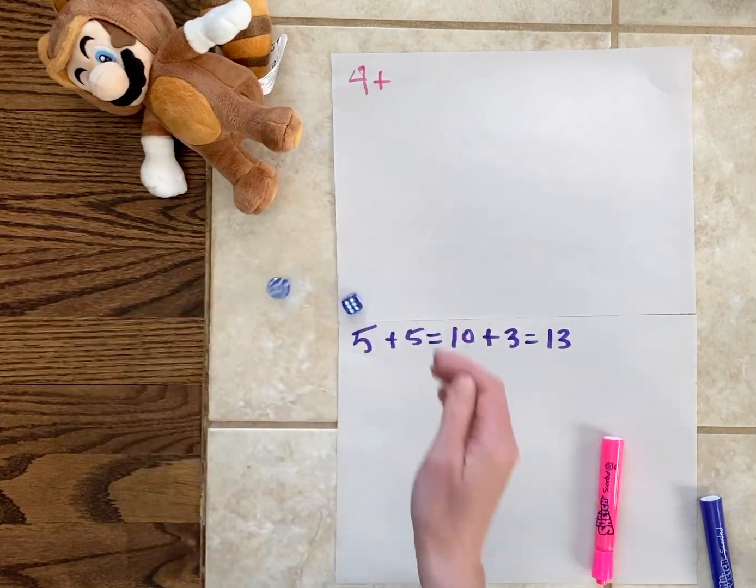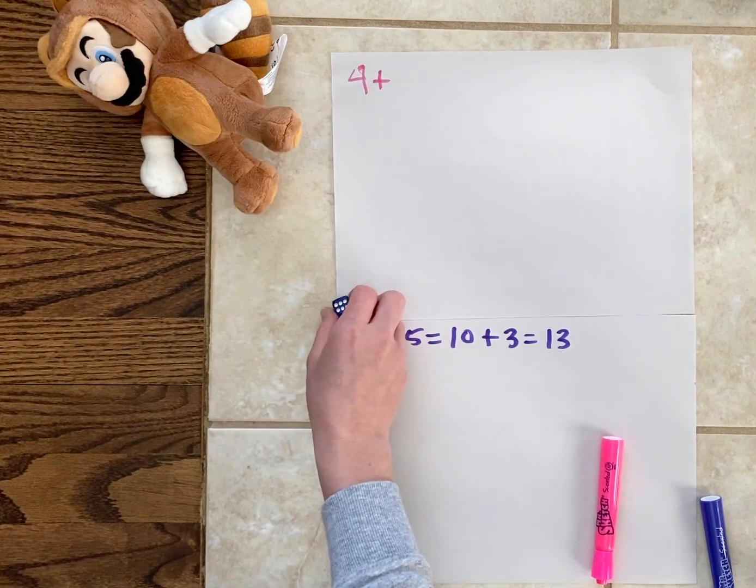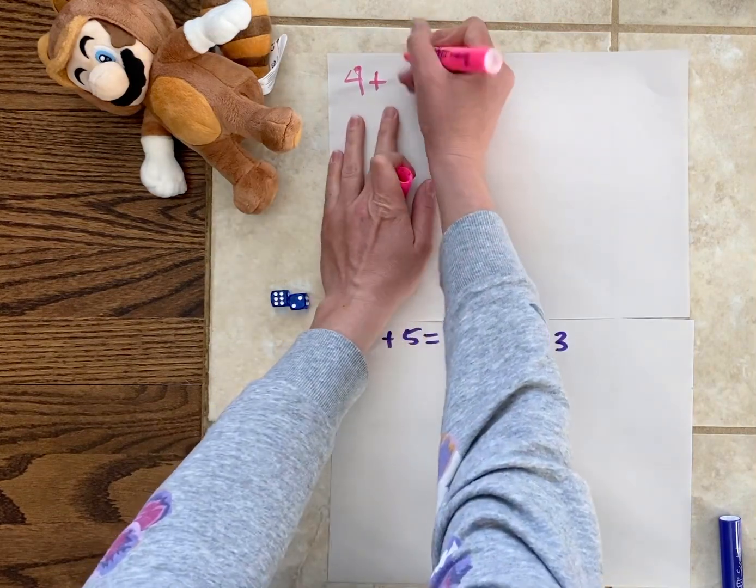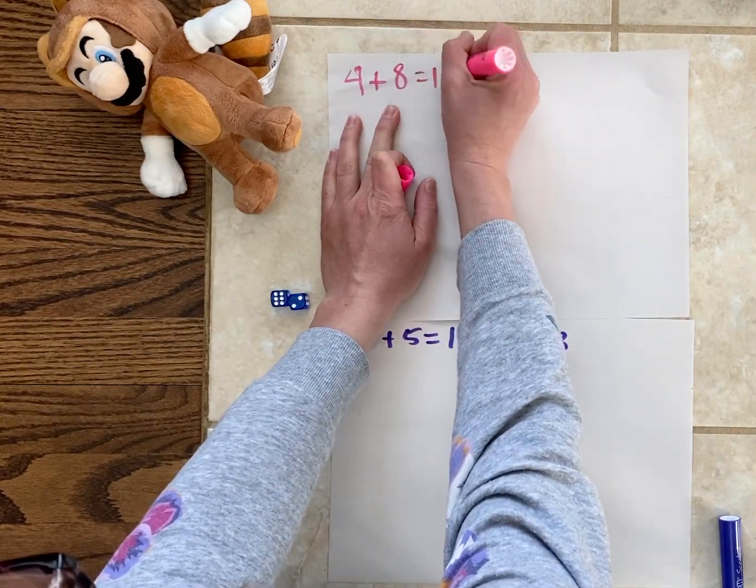Mario's turn. Two and six. Two and six is eight and four plus eight is twelve.